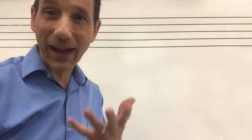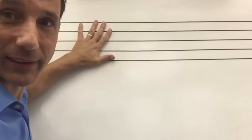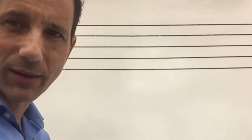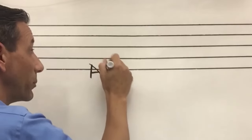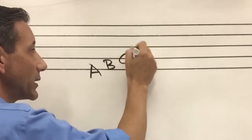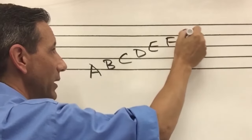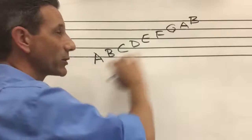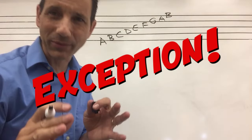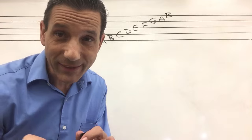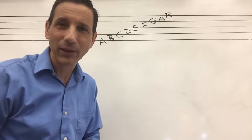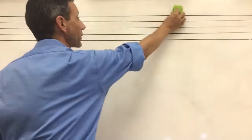The musical staff has five lines and four spaces. We have one, two, three, four, five lines, and four spaces in between. We place the notes on the lines and spaces like this — a line, space, line, space pattern going up. But the bottom line is not A. It's really disappointing — it's not A on any clef: not treble, bass, or alto clef.